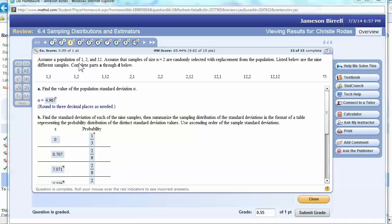I saw that it was marked wrong and several missed it last year too, so it must be worth trying. Assume a population is made up of 1, 2, and 12. Assume the sample size n equals 2 are randomly selected with replacement from the population.